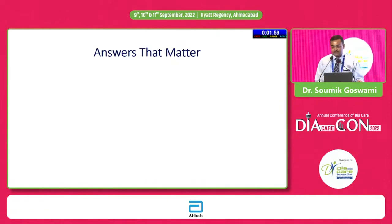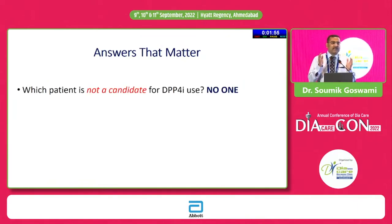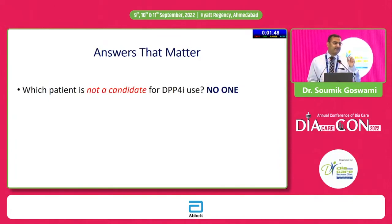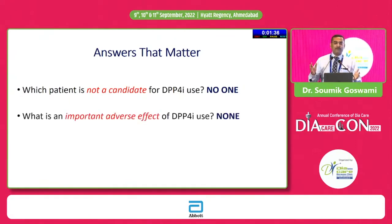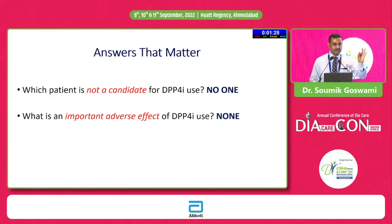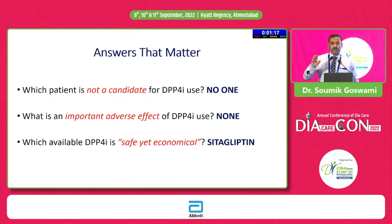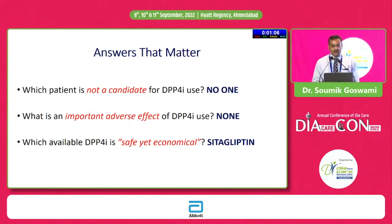Finally, we come to the answers that matter. Which patient is not a candidate for a DPP-4 inhibitor? Possibly no one — except the rare patient with a past history of pancreatitis, ongoing chronic pancreatitis, or pancreatic cancer. Every patient is a candidate for a gliptin. What is an important adverse effect of a DPP-4 inhibitor? I would say none — there are occasional cases of arthralgia or rash, but they make for good case reports and are not very relevant in day-to-day clinical practice. If you ask which DPP-4 inhibitor in India is safe, has extensive safety and efficacy data, yet is economical — the answer is clear: Sitagliptin.